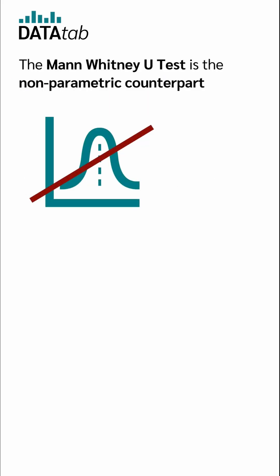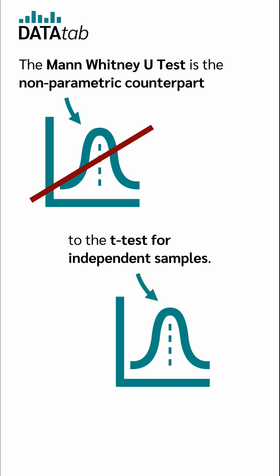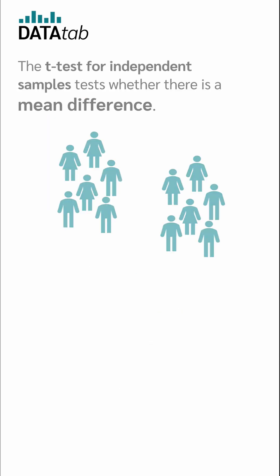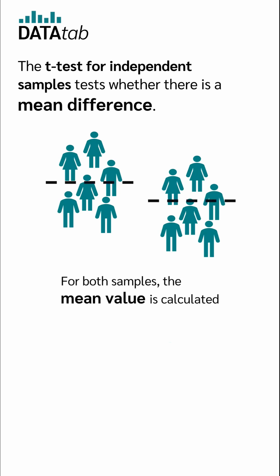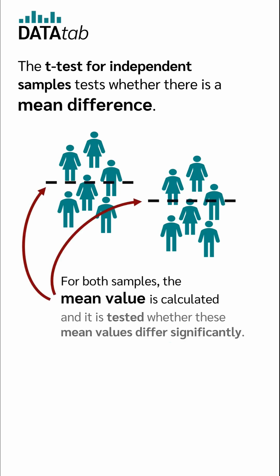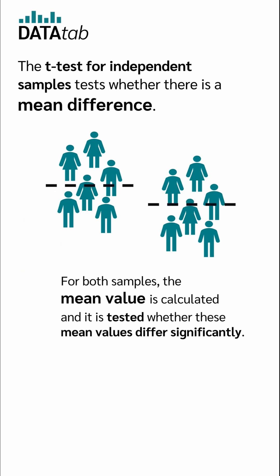The Mann-Whitney U test is the nonparametric counterpart to the t-test for independent samples. The t-test for independent samples tests whether there is a mean difference. For both samples, the mean value is calculated and it is tested whether these mean values differ significantly.